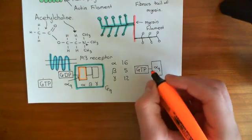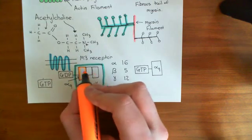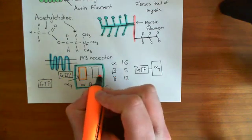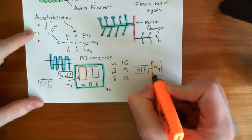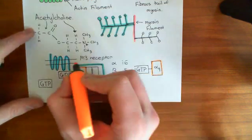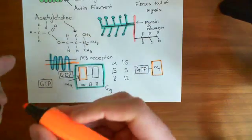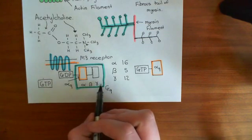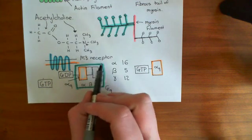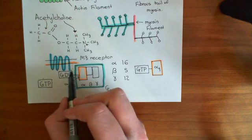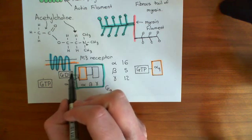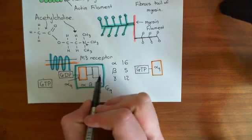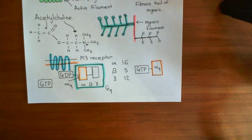G-protein-coupled receptors can either be physically linked to the inactive G-protein, or the inactive heterotrimeric G-protein can just be whizzing around bound to the inner leaflet of the phospholipid bilayer. Heterotrimeric G-proteins in the inactive state — a lot of them are bound to the inner leaflet of the phospholipid bilayer, and therefore the M3 receptor will have access to them when it becomes catalytically active. Occasionally there are some examples of G-protein-coupled receptors which will be physically linked to their heterotrimeric G-protein.